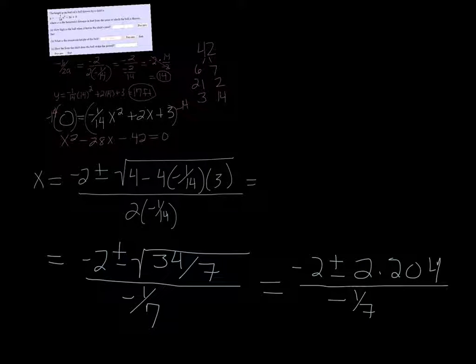All right, so if I do negative 2 plus that and divide it by negative 1 7th, I get that the vertical distance is negative 1.427. Well, I know that's not going to work because it doesn't make sense.